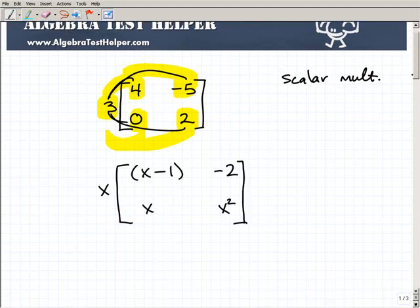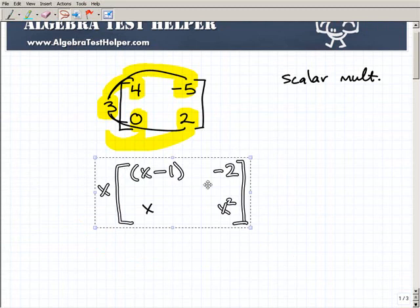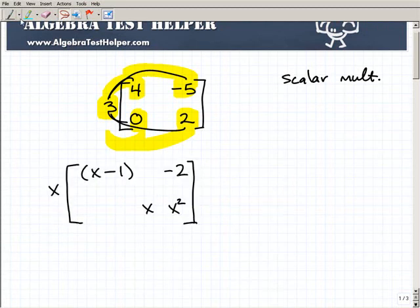And I said, okay, simplify this matrix expression. So that's just kind of fancy words of saying do this problem and write it in its simplest terms. So, oops, I'm going to move this x over here. All right, so what would you do?